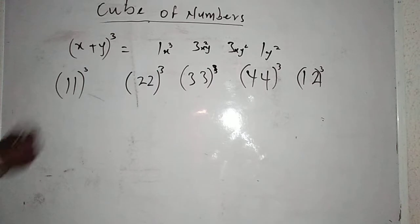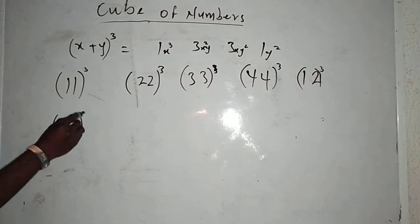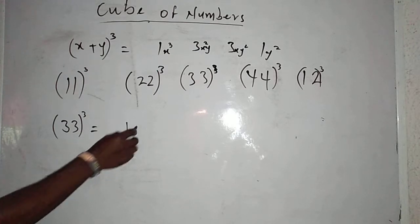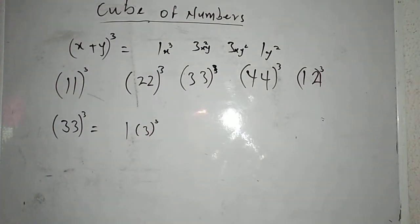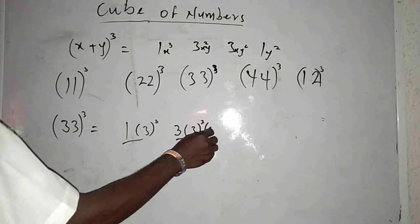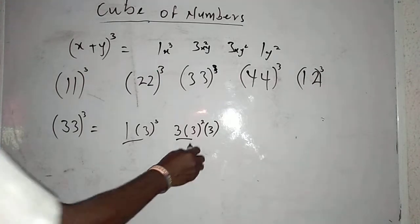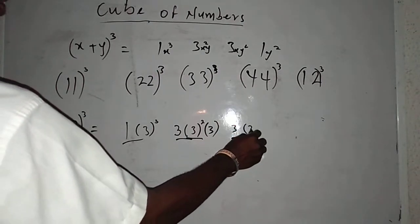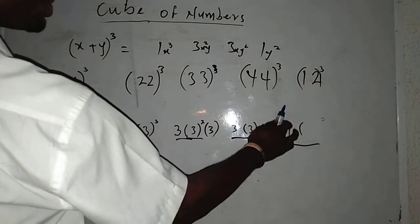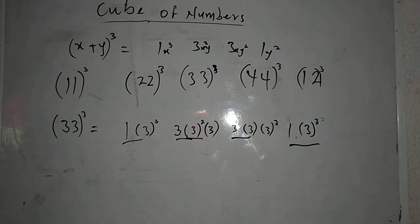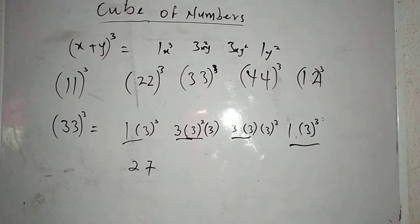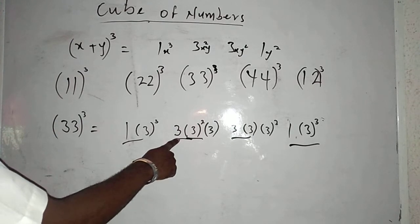Ok, let's go for the next one. I have 33 raised to power 3. My x is 3 and y is 3. First stand: 1 bracket of 3 raised to power 3. Second stand: 3 bracket of 3 squared bracket of 3. Third stand: 3 bracket of 3 bracket of 3 squared. Last stand: 1 bracket of 3 raised to power 3. This gives 27, since 3 times 3 times 3 is 27. Also 3 times 3 is 9, and 9 times 9 is 81.